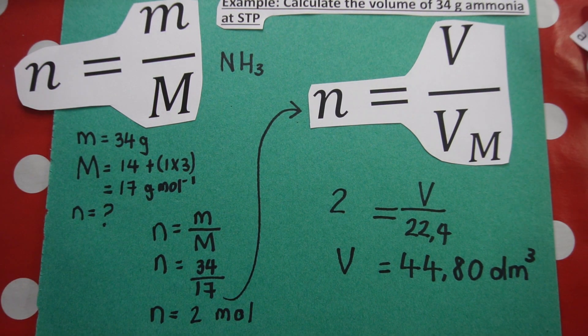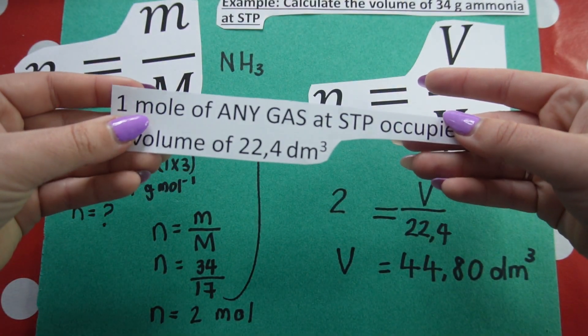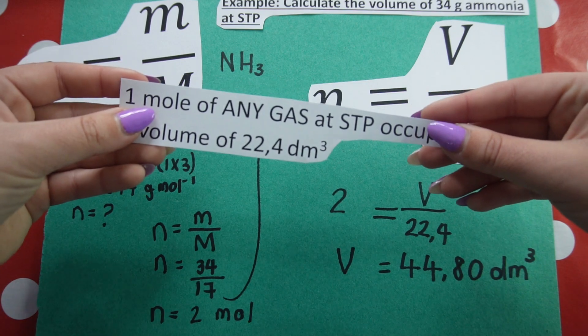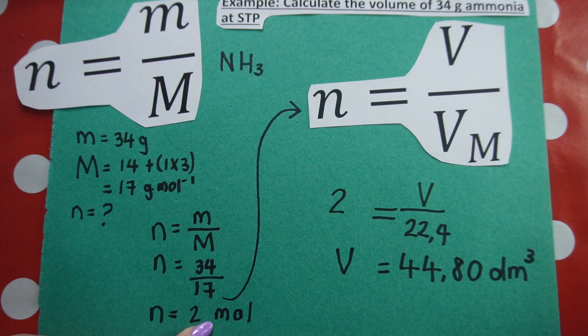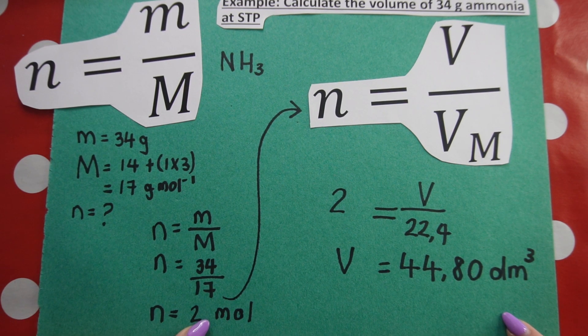And that makes sense because remember, Avogadro's law said one mole of any gas at STP occupies a volume of 22.4 cubic decimeters. So if I have two moles, I will have double 22.4 cubic decimeters, which is 44.8 cubic decimeters.